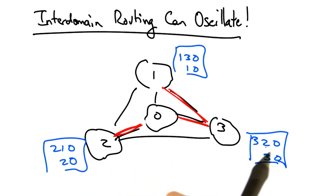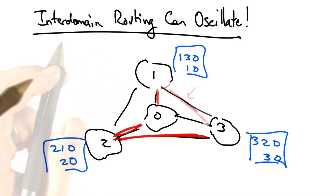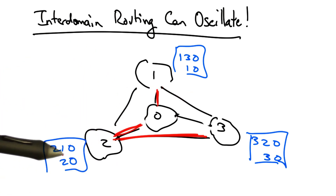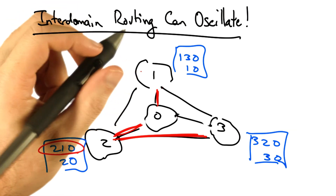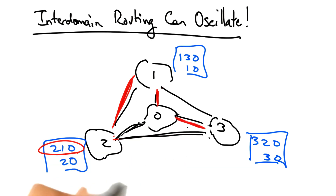Similarly, AS3 sees that it has a more preferred path, 320, so it might switch to that. In doing so, it breaks AS1's path — 130 no longer works. So AS1 has to switch back to its less preferred direct path. But now we're in the same situation all over again, because now AS2's preferred path becomes available via 1. So AS2 now reroutes, and AS3's most preferred path 320 no longer works. So it must switch to the direct path. Now it's very easy to see that this oscillation continues ad infinitum.